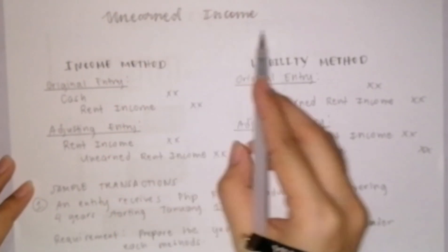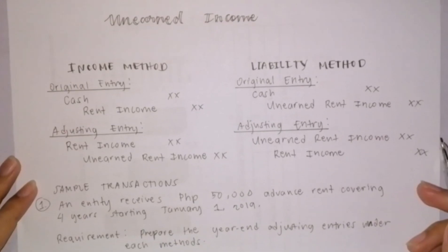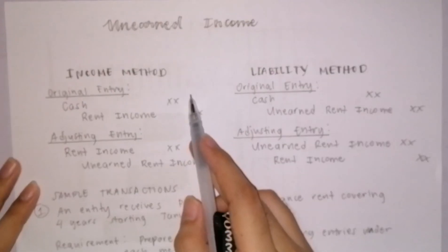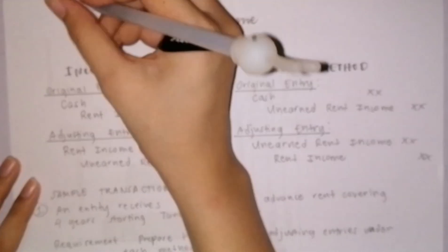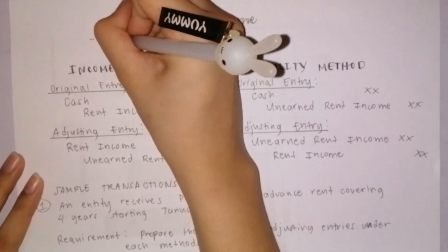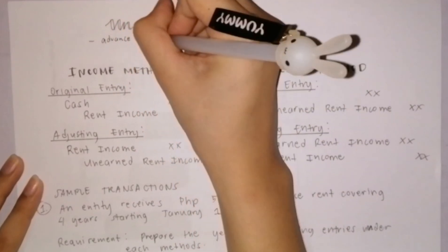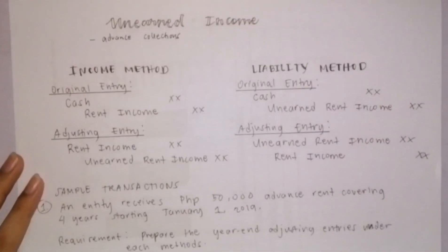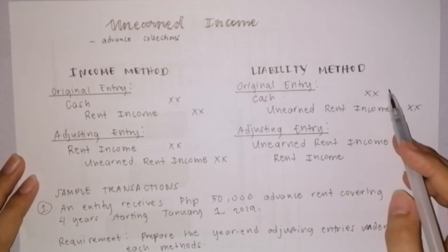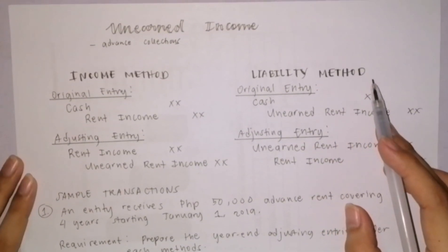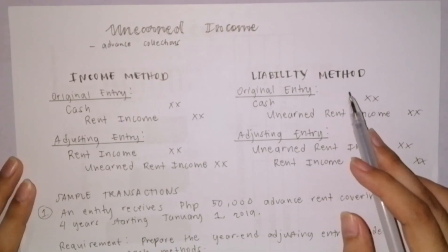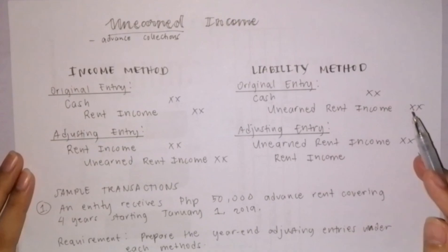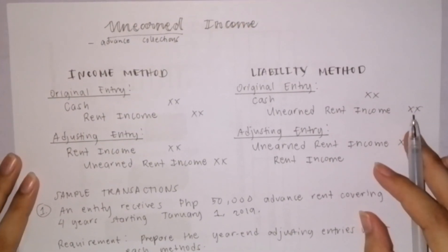This video, we will talk about unearned income. Unearned income is also called Deferred Revenue. Unearned income are advanced collections from customers — payments that the company receives in exchange for products or services that are yet to be delivered or fulfilled in future periods. Kaya unearned pa yung income. The company has an obligation to fulfill whatever the advanced payments from the customers are.